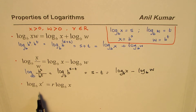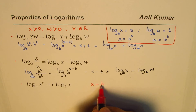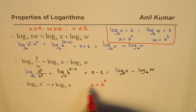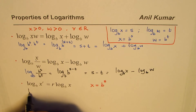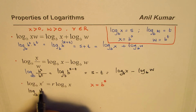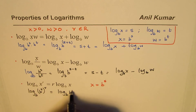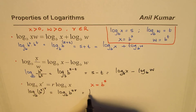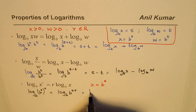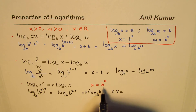For the power property, we substitute X as B to the power of S. We write log base B of B to the power of S, all raised to the power of R. This becomes log base B of B to the power of S times R. Using the basic logarithm property, that equals S times R.